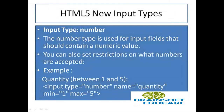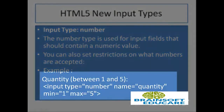Then the next input type is number. Number type is used for input fields that should contain a numeric value. You can also set restrictions on what numbers are accepted — basically setting a range. In our example, the numbers are restricted between 1 and 5. The input type is number here.